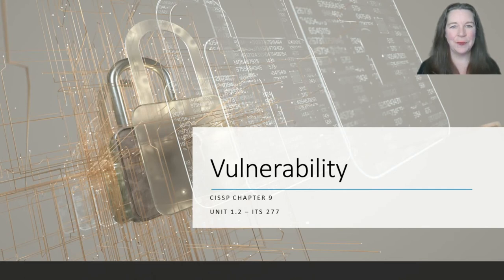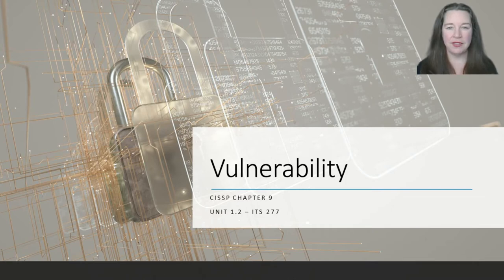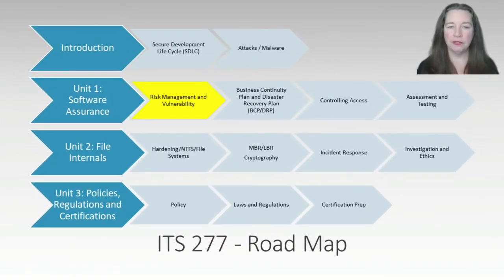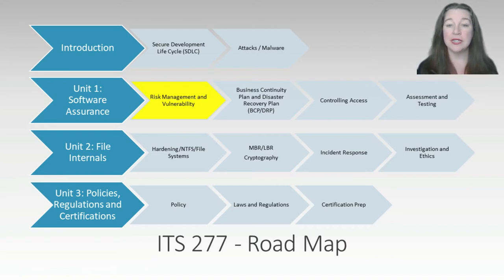Hi, and welcome back. This time we're going to be discussing CISSP Chapter 9 on vulnerabilities in our class, ITS 277. This will be Unit 1.2. In this chapter, we're going to finish out our first section of Unit 1, Software Assurance on Risk Management and Vulnerability. We're going to follow this with Business Continuity Planning and Disaster Plan with Control Access and Testing and Assessment to finish out Unit 1.